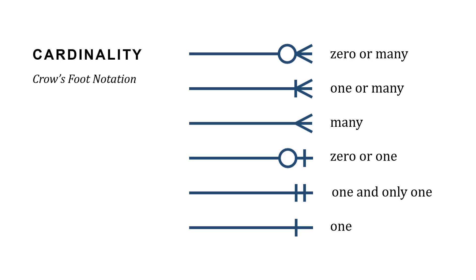So when we're showing these relationships, we're calling that cardinality. And the most common way to show that relationship or that cardinality is using crow's foot notation.